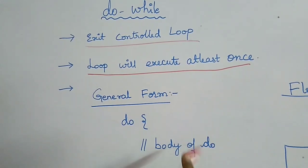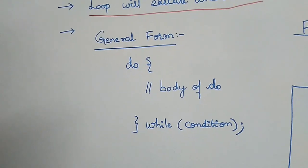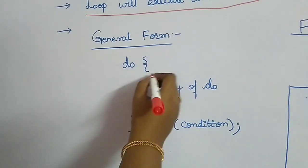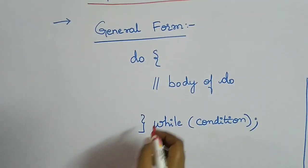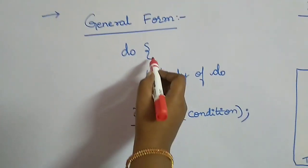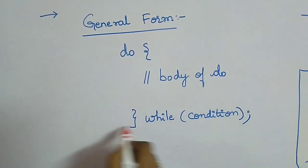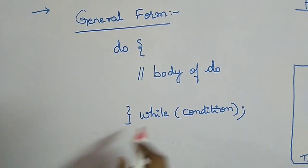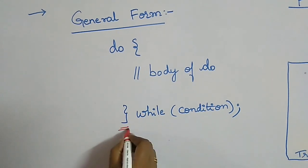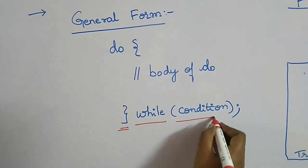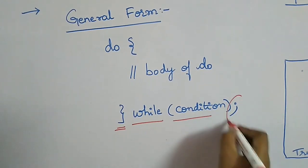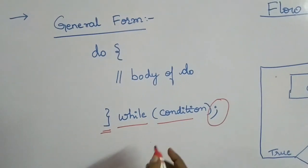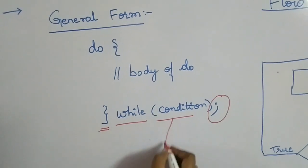Let's look at the general form of do-while. It starts with the keyword do, followed by curly braces containing the body of the loop. After the closing curly brace, you write while and then the condition in parentheses. The semicolon after the closing parenthesis is mandatory — without it you will get a syntax error.